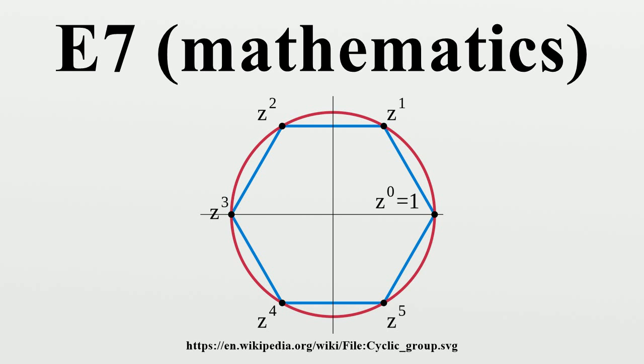This defines the so-called split-adjoint form of E7. Over an algebraically closed field, this and its double cover are the only forms. However, over other fields, there are often many other forms, or twists, of E7.